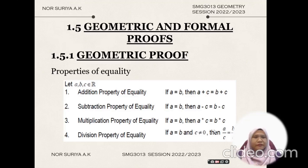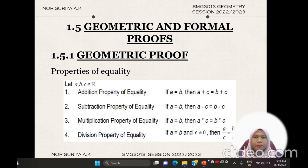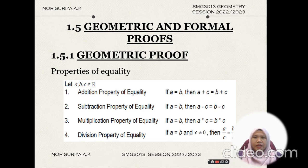Hi, assalamualaikum and welcome everyone. We are going to look into 1.5 Geometric and Formal Proof. The first topic is properties of equality. In equality we have nine properties, and let's do some mind maps on these properties.